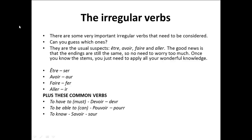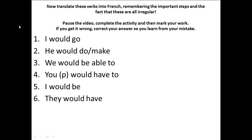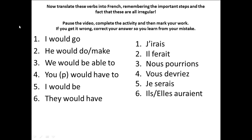Only look at the stems if you need to, as you may be able to remember them. Now translate these verbs into French, remembering all the important steps and the fact that these are all irregular. Pause the video, complete the activity and then mark your work. If you get it wrong, correct your answer so you learn from your mistake. Number one: 'I would go' — j'irai. Number two: 'he would do or make' — il ferait. Number three: 'we would be able to' — nous pourrions. Number four: 'you plural would have to' — vous devriez. Number five: 'I would be' — je serais. Number six: 'they would have' — ils ou elles auraient. Notice how you do pronounce the S with the L because the next word begins with a vowel.